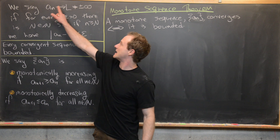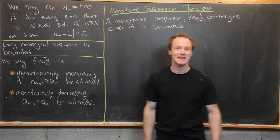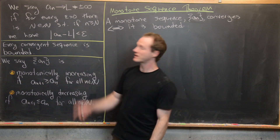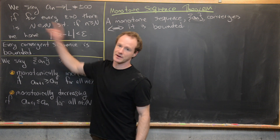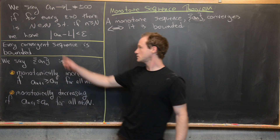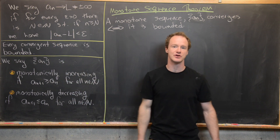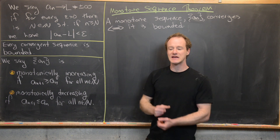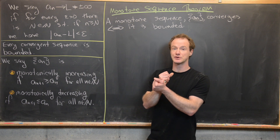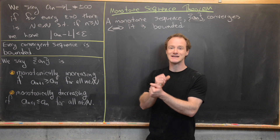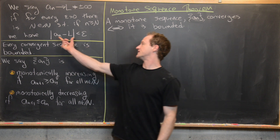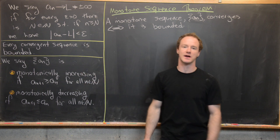We say that a sequence a_n converges to L, which is not equal to plus or minus infinity — so this is a finite limit — if for every epsilon greater than zero, there is a natural number N such that if n is greater than or equal to N, we have |a_n - L| < epsilon. What that means is no matter how small the epsilon we pick, we can find a point in the sequence after which every member is very close to L, within epsilon of L.